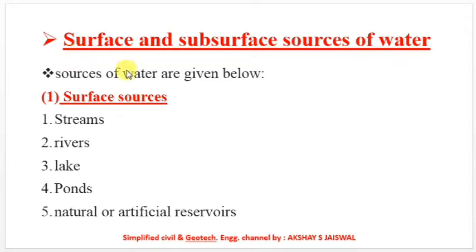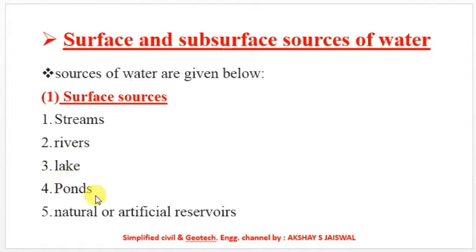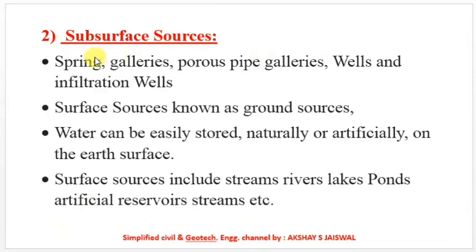Surface and subsurface sources of water: Surface sources, which are above ground level, include streams, rivers, lakes, ponds, and natural or artificial reservoirs. Subsurface sources, which are below ground level, include spring galleries, porous pipe galleries, wells, and infiltration wells.